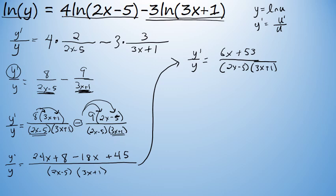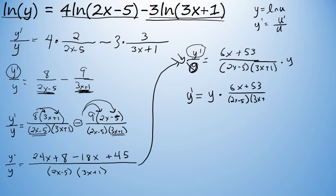I've now simplified the right side as much as I can, but it's not the final answer yet because I haven't isolated the derivative of y with respect to x. To isolate y prime, I'll multiply both sides of the equation by y. That eliminates the y on the left side and isolates y prime. On the right side I'll have y times 6x plus 53 over 2x minus 5 times 3x plus 1. Since I don't want a factor of y in the final answer, I'll look back at the original problem — y equals 2x minus 5 to the 4th over 3x plus 1 to the 3rd — and substitute that expression for y.